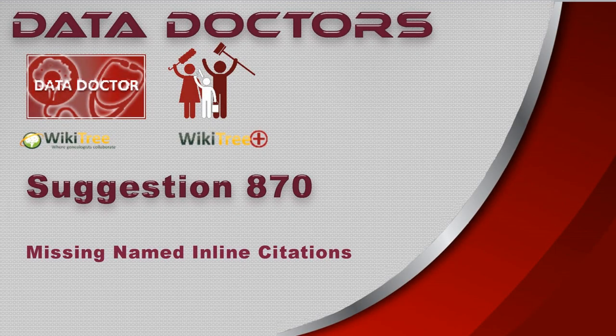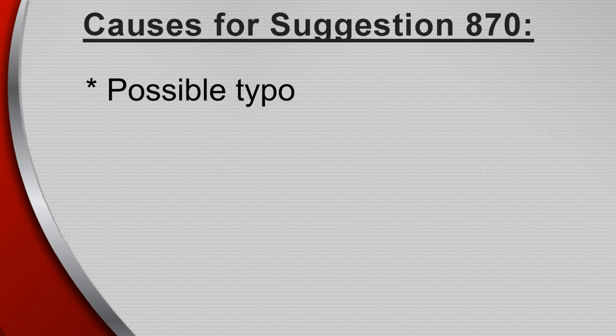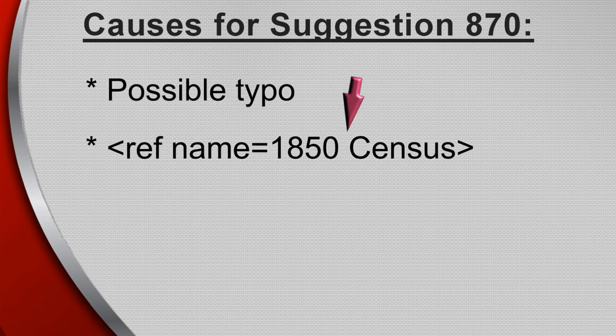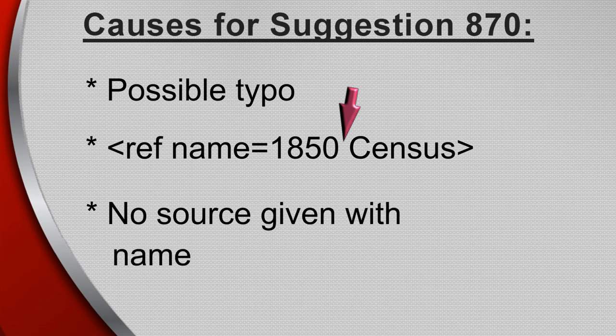Welcome to Data Doctor's video, Suggestion 870: Missing Named Inline Citations. Causes for Suggestion 870 include a possible typo, a space in the reference name, and no source given with the named reference.